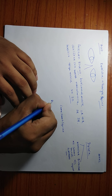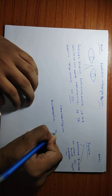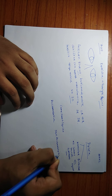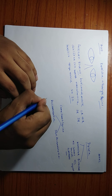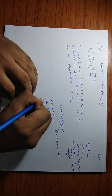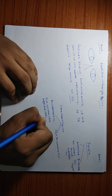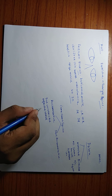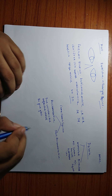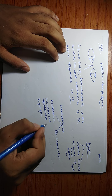Comitant squint is divided into accommodative and non-accommodative. Accommodative squint is due to uncorrected refractive error. The treatment is to give glasses. If we give glasses and the squint is corrected, that means it was accommodative squint. But if it is not corrected by glasses, then it is non-accommodative squint.